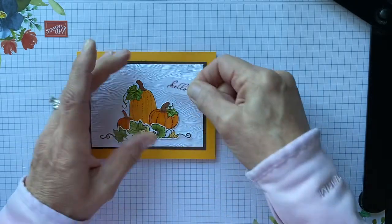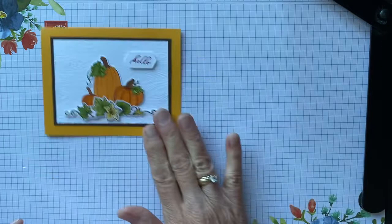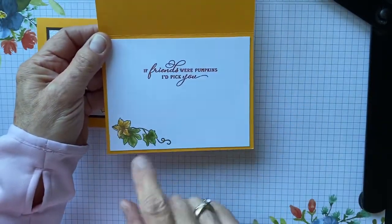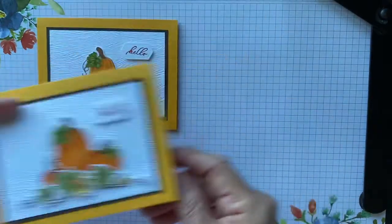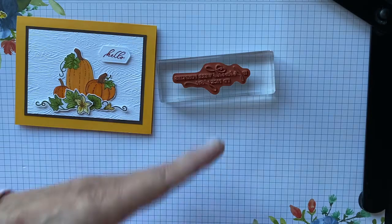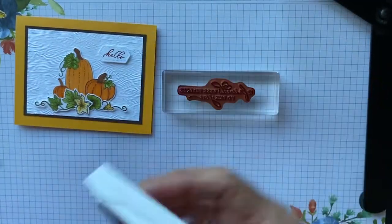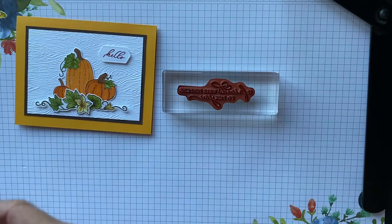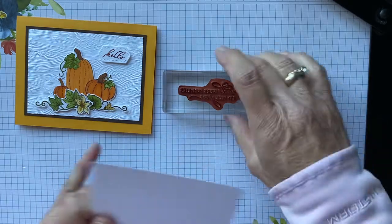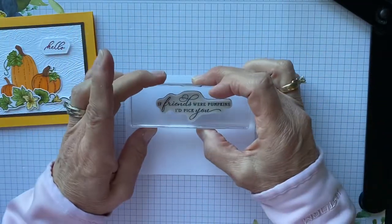Okay, then for the inside of the card I also stamped the inside, colored it, and then stamped the sentiment. So we're going to take the sentiment and stamp it in the Cajun Craze. I love this sentiment too, it's very cute. And grab my other paper here. We're going to stamp that right here.